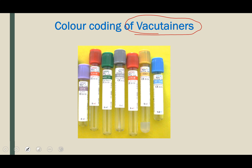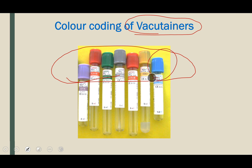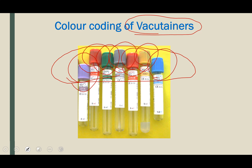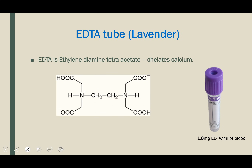Vacutainers contain different colored tops, and based on this color we can identify the type of anticoagulant present in the tube. Let us discuss each and every type. The lavender colored top indicates the presence of Ethylene Diamine Tetra Acetate (EDTA) in the tube. EDTA is coated and dried on the walls of the tube.